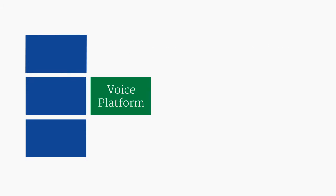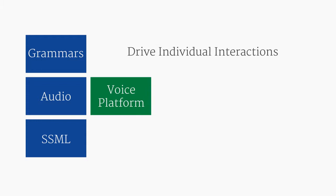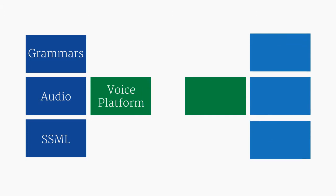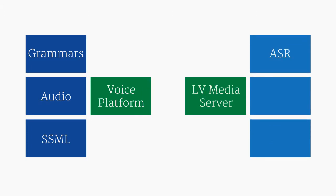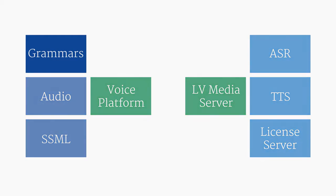Broadly speaking, we can divide the components into two groups. On one end are the pieces that are supplied by developers, including a voice platform which executes speech applications, and things such as grammars, audio, and SSML documents that drive individual interactions. On the other end are the various components of a speech installation, including the Lumenvox media server, automatic speech recognizer, text-to-speech server, and a license server. We'll cover each one in turn, starting with grammars.